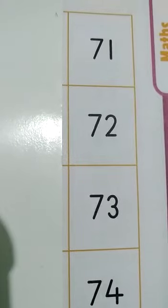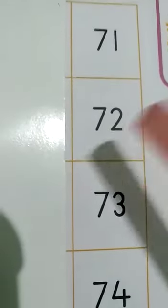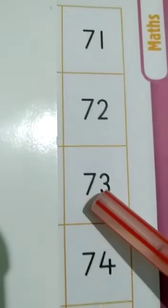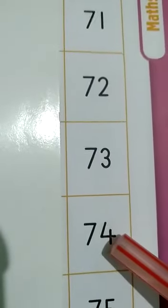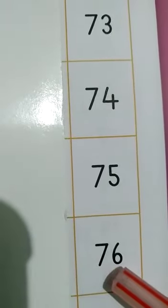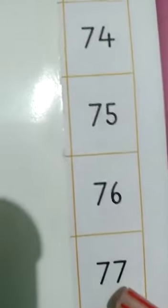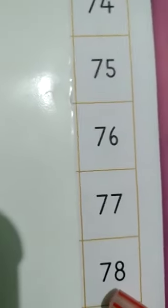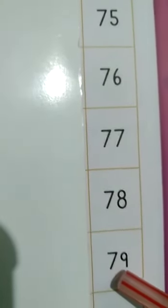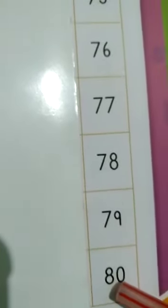Okay, look and see now kids. 71, 71, 72, 72, 73, 73, 74, 74, 75, 75, 76, 76, 77, 77, 78, 78, 79, 79, 80, 80. Very good. Understood all of you kids? Numbers 71 to 80.